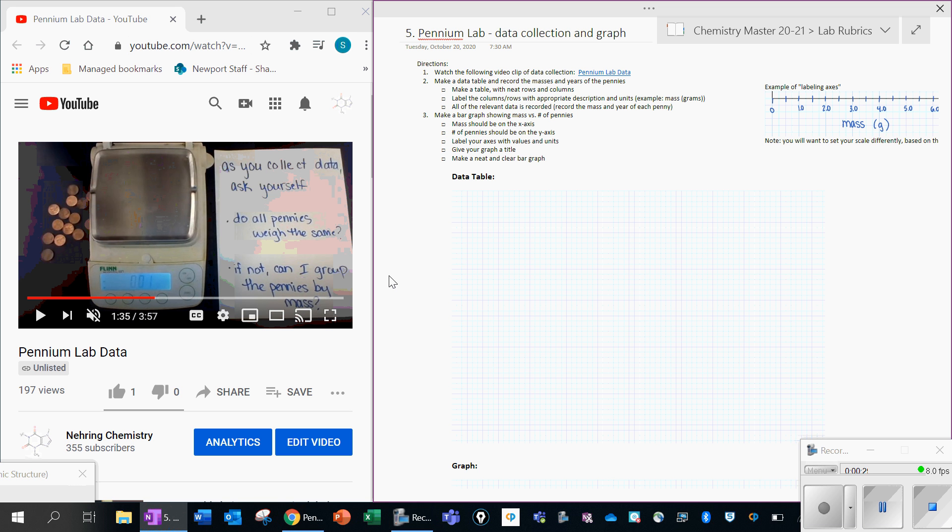On this top part, we want to make a data table. And when we talk about a table, we want to have it actually be like a table, meaning with rows and columns. And if you look at what we want to be collecting from the directions up here, we want to collect the mass and the year. So what we might do is say penny year, and then penny mass.